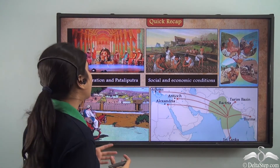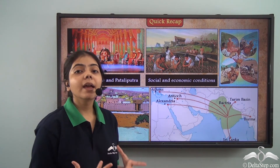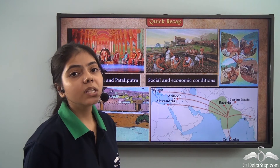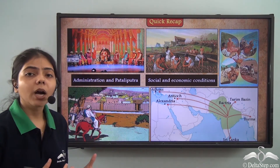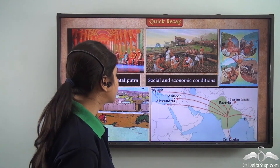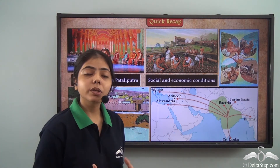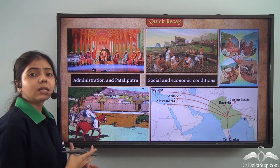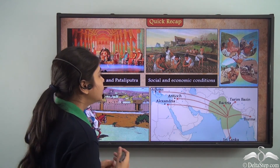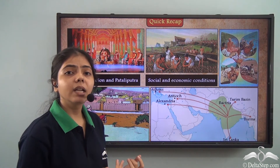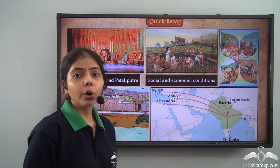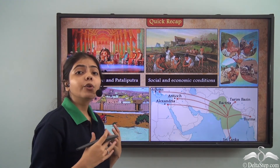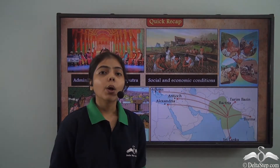To recap: the Mauryan empire had a layered administration with different committees and ministers allocated different roles, including Mahamathyas, Amatyas, and a spy network to prevent mischief. Provinces were divided into districts, and districts into villages. The capital Patliputra was beautifully and well governed. Agriculture was the main occupation, with flourishing crafts like pottery, masonry, and carpentry. Trade brought wealth to the empire. One negative aspect carried forward to today is the prevalence of the caste system in some parts of the country.